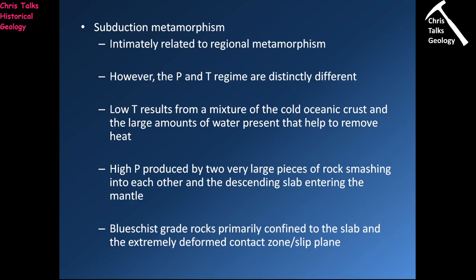Subduction metamorphism is intimately related to regional metamorphism when occurring at an ocean-continent convergent boundary. However, the pressure and temperature regime is completely different. With regional metamorphism, pressure and temperature increase the deeper you go in the mountain range. In subduction metamorphism, it is high pressure because two massive pieces of crust are smashing into each other, and the subducting oceanic crust adds further pressure.